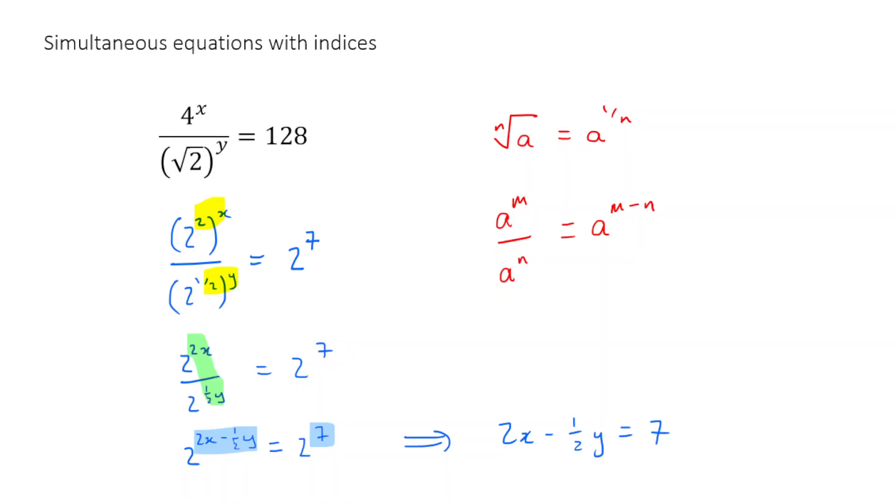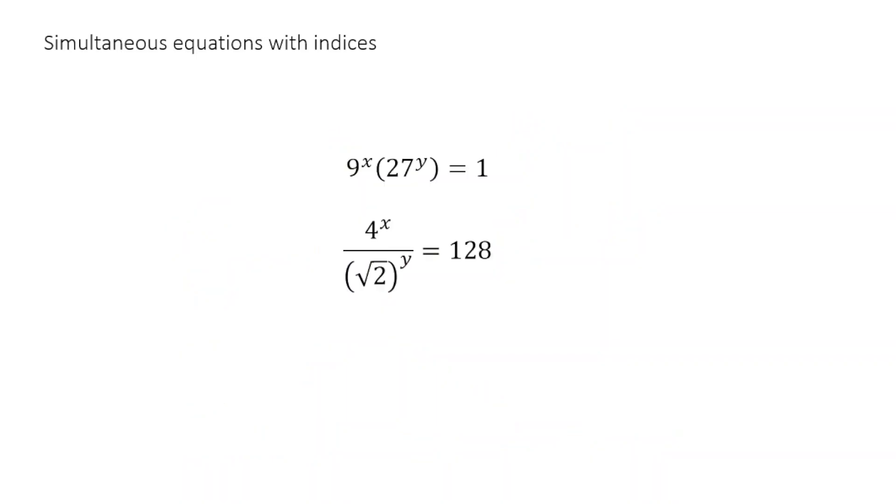So to recap, what have we just done? We've converted this difficult equation here into this simpler equation here. So we have taken this pair of simultaneous equations that we can't solve and converted them to this pair of simultaneous equations, which we can solve using our known methods of elimination or substitution. Now I'm going to use elimination here. The reason I'm going to do that is because we've got 2x and 2x here. So if I subtract one equation from the other, I'm going to eliminate my x's. So let's do that.